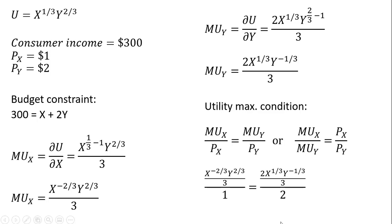After making our substitutions, we have the marginal utility of good X divided by the price of good X ($1), and the marginal utility of good Y divided by the price of good Y ($2). From here we'll simplify and solve for either Y or X — it doesn't matter which.